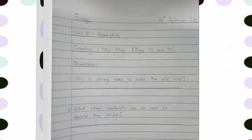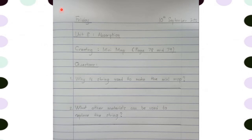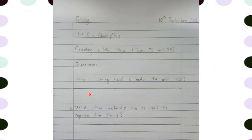Okay kids, this is how you write the questions in your science exercise book. Write down today's day and date, write down the unit — you need to add absorption — creating mini mob in bracket, page 78 and 79. And then copy the questions. There are two questions: question one, why is string used to make the mini mob? Make sure you have a space for you to write down the answer.